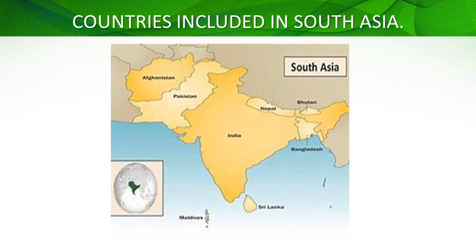Here we have the countries included in South Asia. You can see them clearly with the help of the map, which shows the different countries. Please ignore the map of India, especially Jammu and Kashmir — they have not given a correct map of that region. But you can see the regions which the South Asian countries cover, and the countries included in South Asia are very much evident from this map.